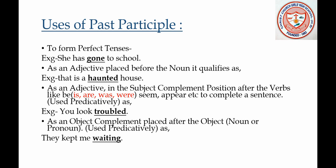Third, as an adjective in the subject complement position after verbs like be, is, are, was, were, seem, appear, etc., to complete a sentence — used predicatively. Example: 'You look troubled.' In this sentence the word 'troubled' is the past participle.